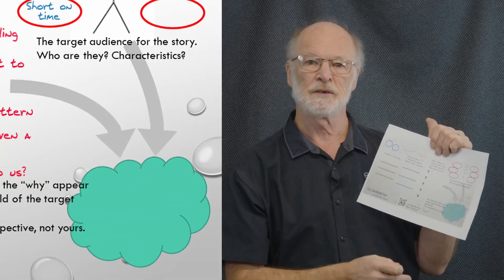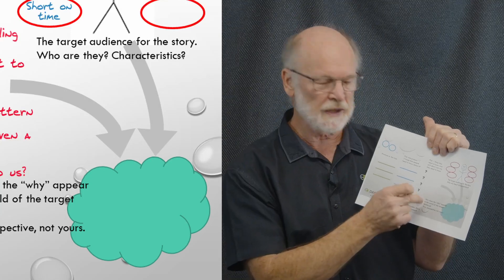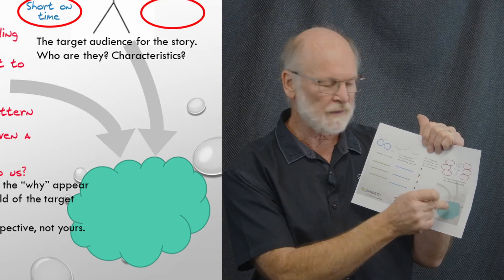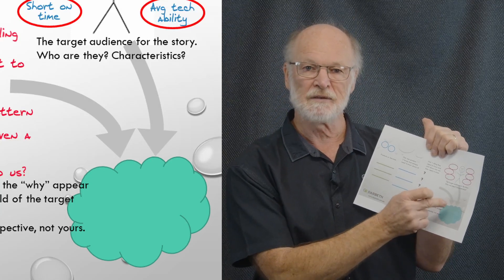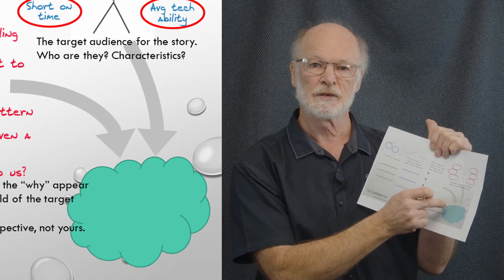Once you have that target audience understood, you then look at what that important why is. In this green box here, green balloon, you just phrase that why in ways that make sense to your target audience. What is the why in terms of how they perceive the particular problem that you are trying to solve.